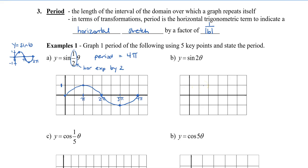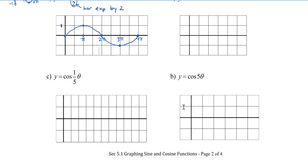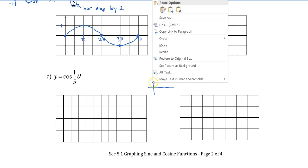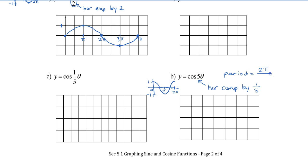Now let's look at cos 5θ. Keep in mind the basic cosine graph: it starts at the top at 0, comes down to a minimum at pi, and returns to a maximum at 2pi, ranging between 1 and negative 1. The coefficient 5 gives us a horizontal compression by a factor of 1/5. Our original period was 2pi, so the new period is 1/5 of 2pi, which is 2pi divided by 5.